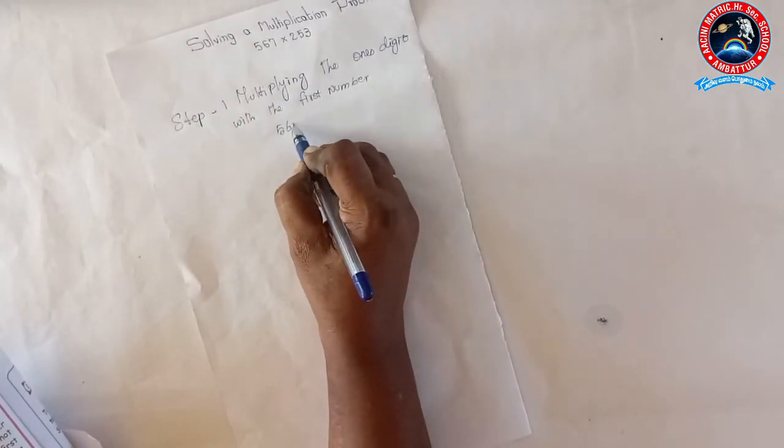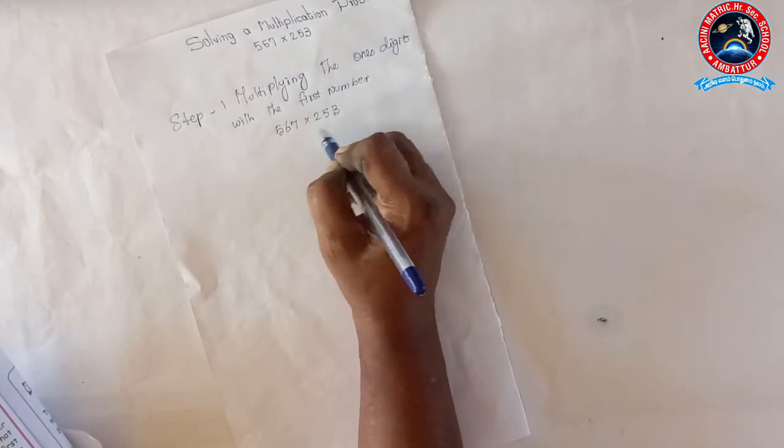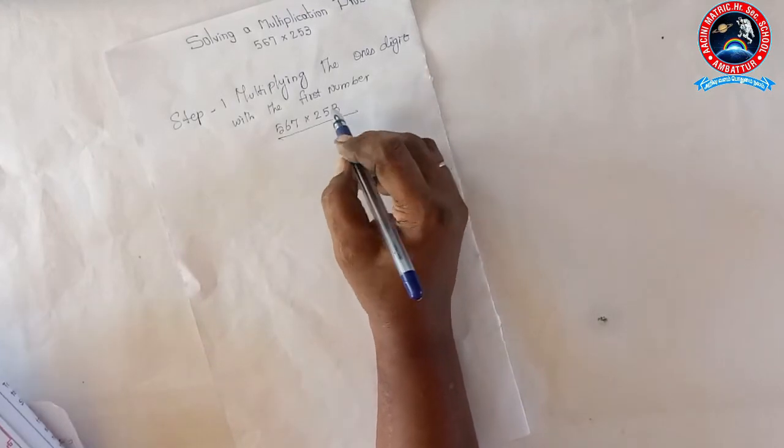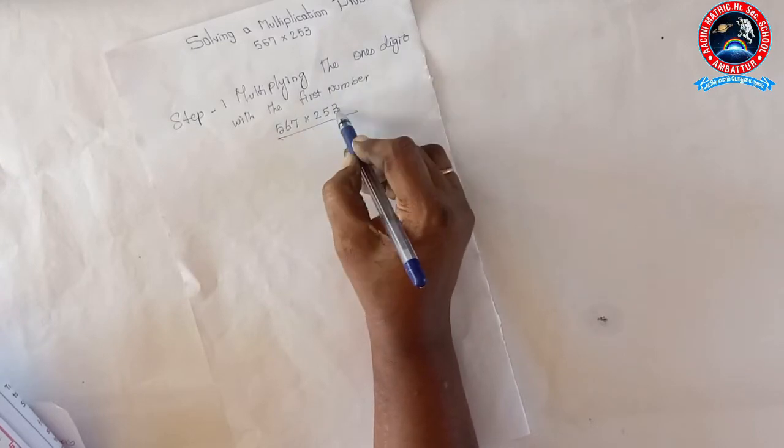Step 1: 567 into 253. Multiplying ones digit with the first number.